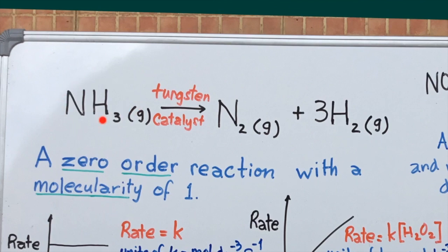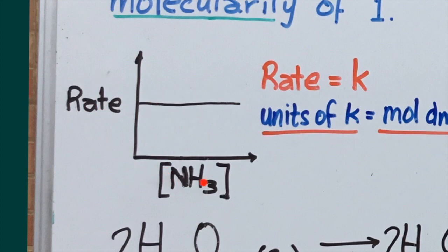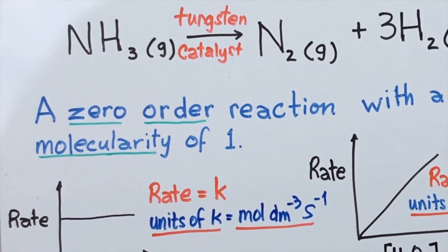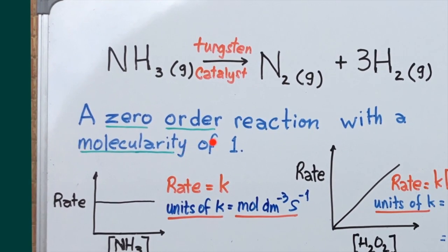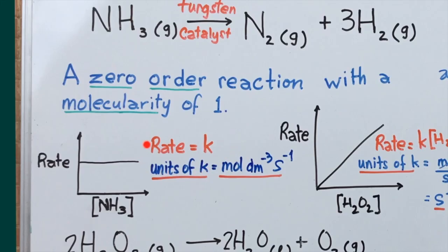Here we have the decomposition of ammonia. In the presence of a tungsten catalyst at high temperature, this is classified as a zero order reaction, which means that the rate of the reaction remains constant even when the concentration of ammonia is increased. But we also say that this reaction has a molecularity of one because it's a simple process of decomposition involving one molecular entity breaking up into its products. Molecularity can only be determined from a single elementary step equation, and it is based on the number of reacting particles that must collide. If no particles are actually colliding, then the molecularity for a case like this would be one. Because the rate is constant, we can say that the rate of this reaction is equal to some value K, the rate constant.